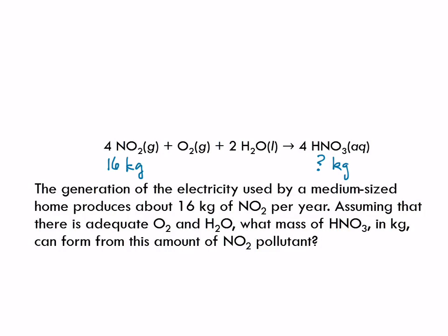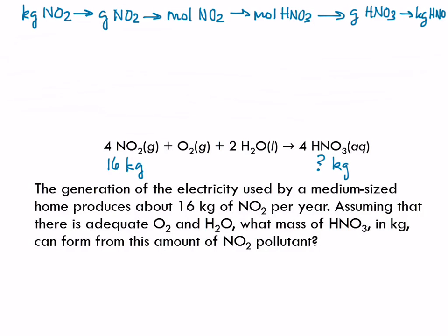So my path, I'm going to write it out because we're still new at this, is going to be kilograms of NO2 to grams of NO2 to moles of NO2 to moles of HNO3 to grams of HNO3 to kilograms. I feel it's barely fitted on there. Physically writing out the path is very helpful.